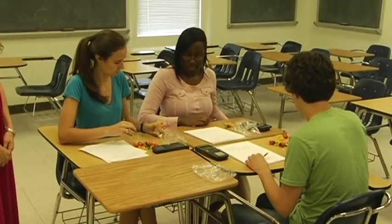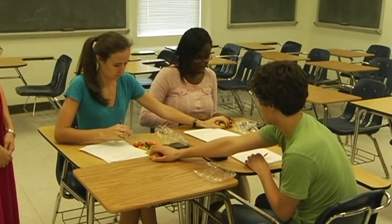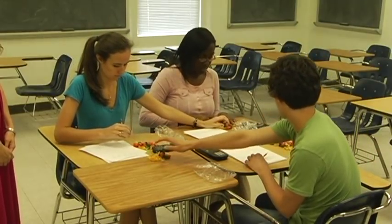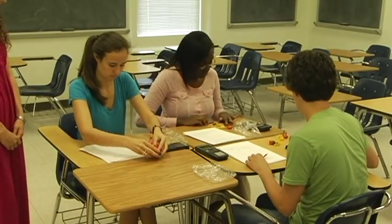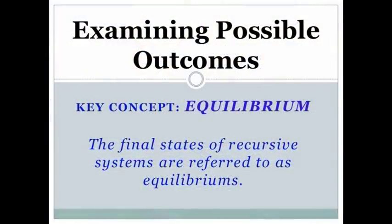Continue this iterative process and observe the outcome. In this activity, there are three distinct outcomes possible. The final states are referred to as equilibriums. When distributing your candy to the class, you may want to do so in a way that ensures that each type of equilibrium occurs. This will allow rich discussion with the class.